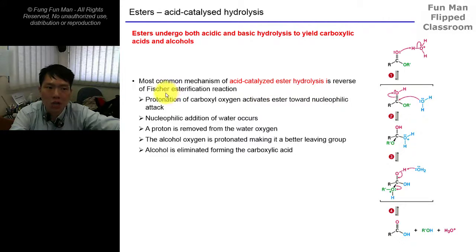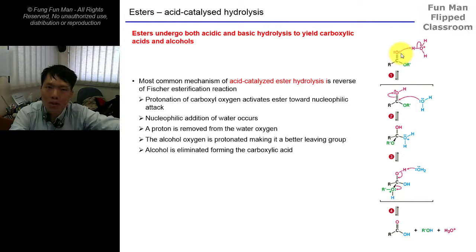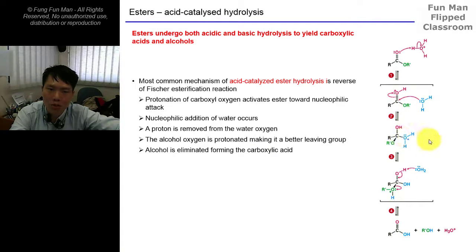Step one: the lone pair of the C=O double bond picks up the H from the acid, making the carbon more electron deficient. It then attracts water - which is not that nucleophilic, but it is attracted - forming a tetrahedral structure. The equilibrium will push and reform the pi bond to get back your alcohol and carboxylic acid.